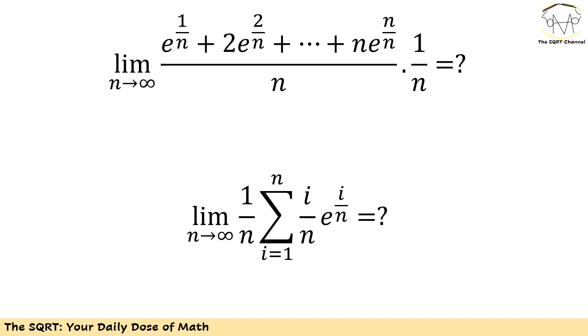Basically I'm going to rewrite e to the power of 1 over n plus 2 times e to the power of 2 over n and so forth over n as 1 over n times sigma i over n times e to the power of i over n. Here i is going to be between 1 and n, where n moves towards infinity.